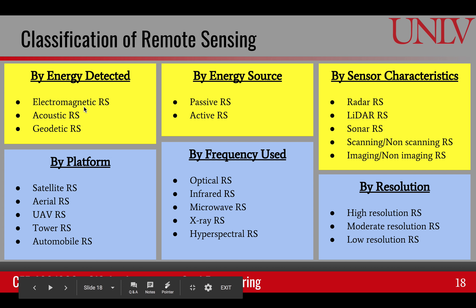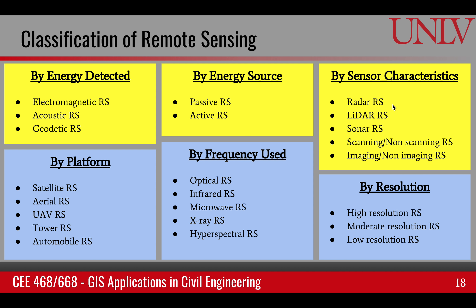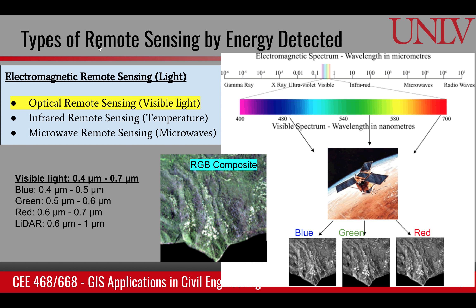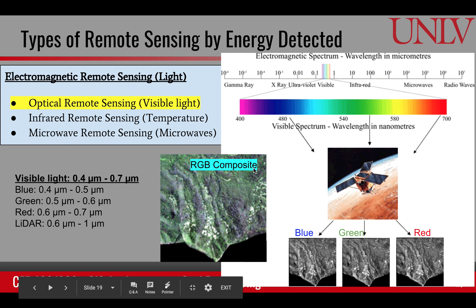I'll talk briefly about classification based on energy, energy source, and sensor characteristics. Looking at electromagnetic energy, it includes optical remote sensing, infrared remote sensing, and microwave remote sensing. In optical remote sensing, we use visible light — within the visible light we have blue, green, and red frequencies. Typically, sensors pick these three colors and combine them to make an RGB composite.